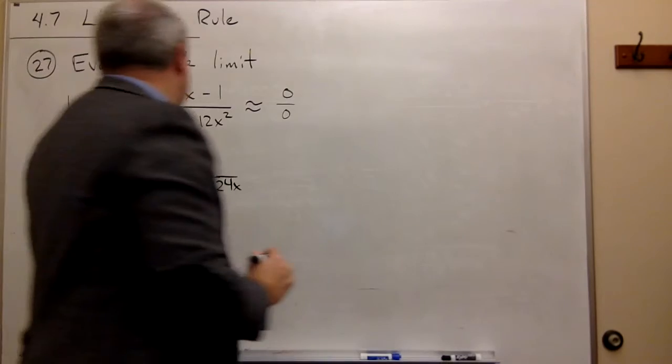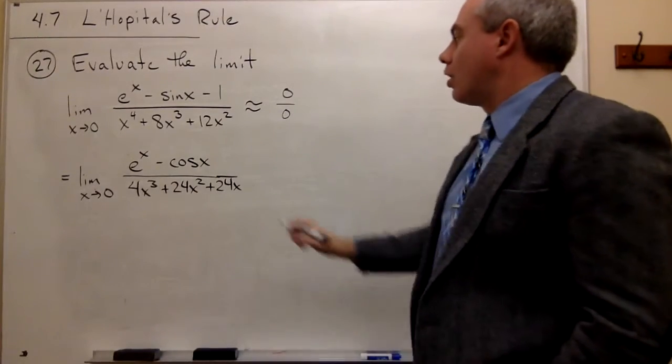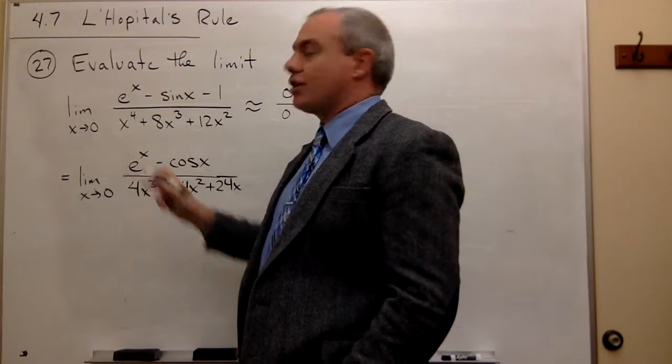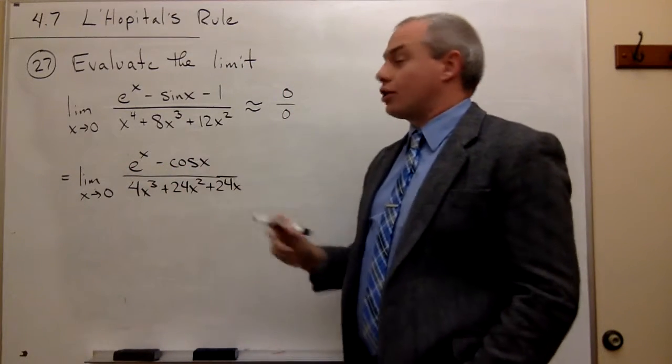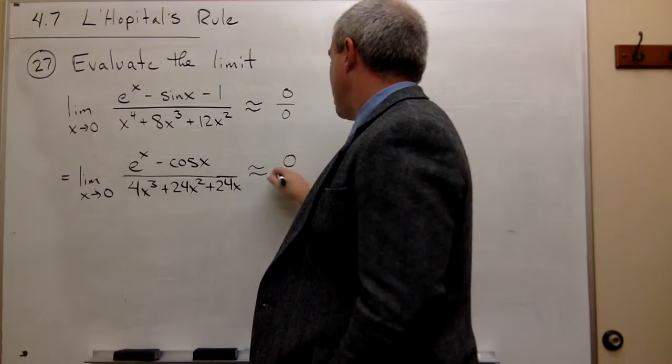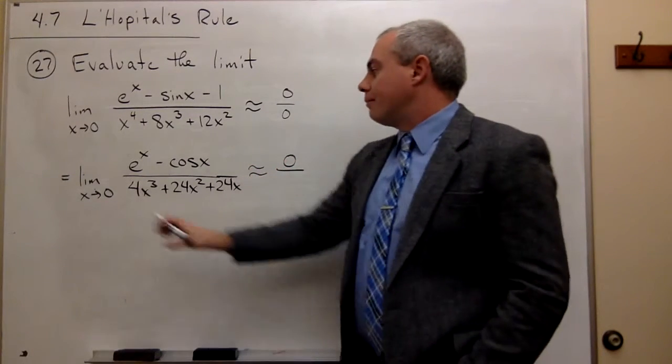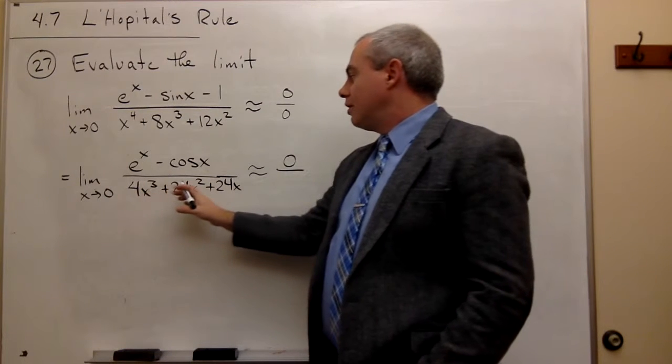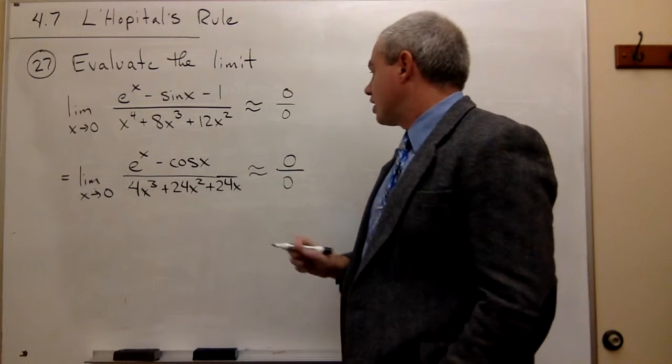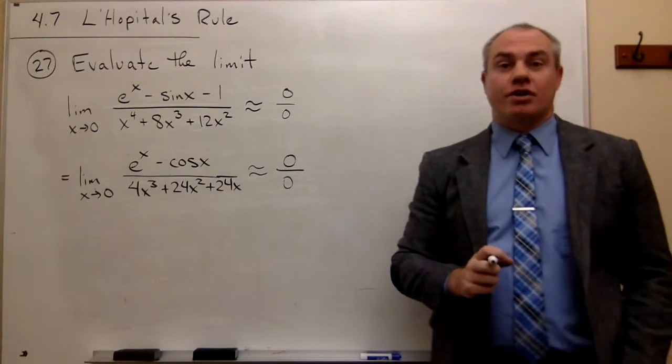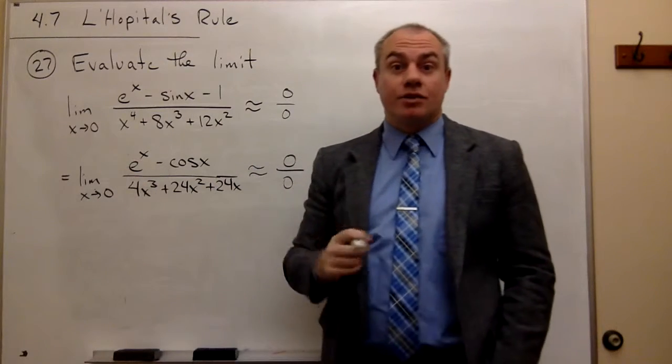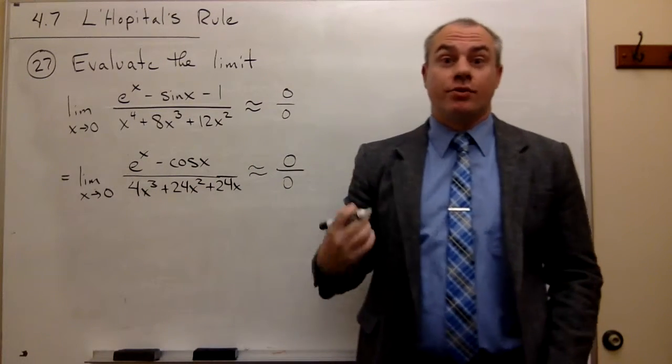So now let's check out the form. Are we done? If I plug in 0 here, I get e^0 which is 1, minus cos(0) which is 1. So the form here on top, we have 0. On bottom, I have 0 plus 0 plus 0, which is 0. So I still have form 0/0. So that means that to find this limit, I could use L'Hôpital's rule. So let's do it again.